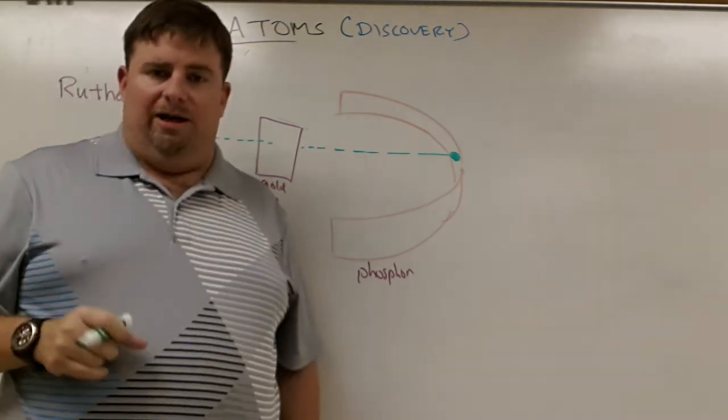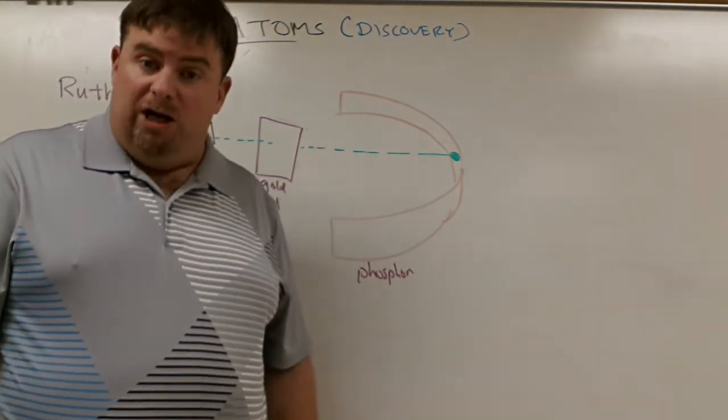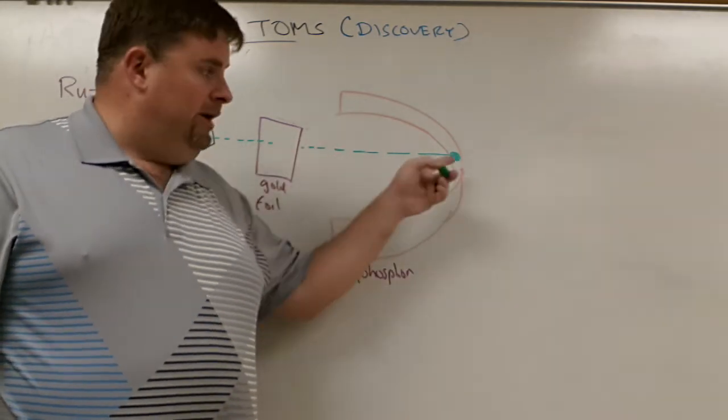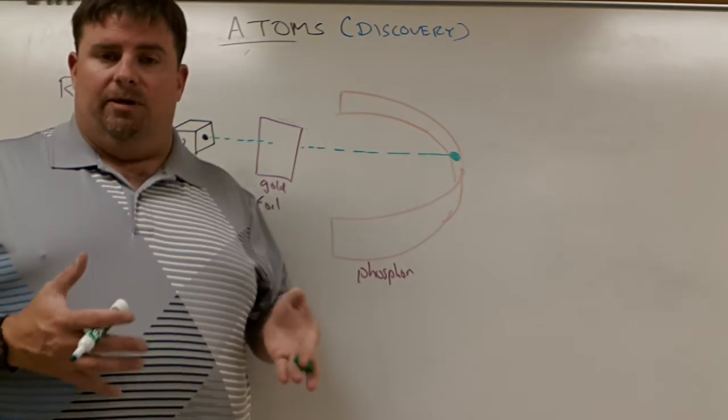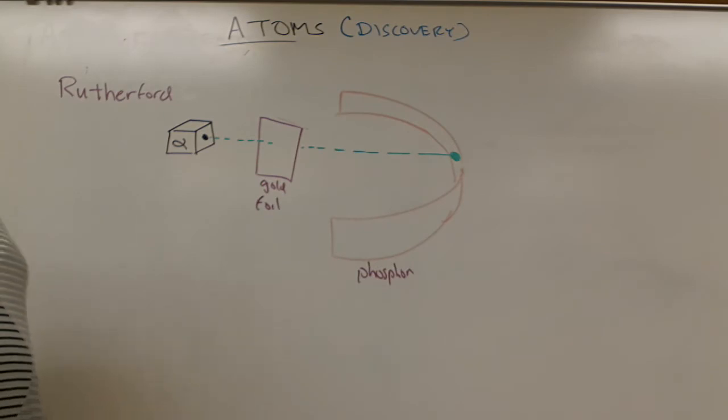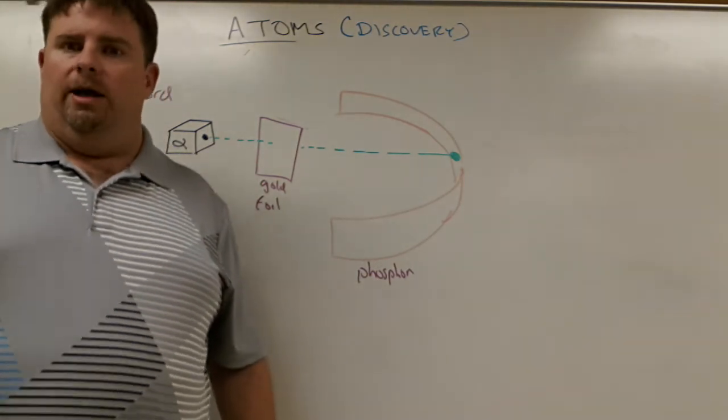And that means every time it hits, you see a little flash of light, and that was a graduate student's job, to sit there and count the flashes of light. Fun job, right? So as these things come through, they hit the gold foil, would come through and hit that gold foil, they'd come through and hit the phosphor paper, they'd count the number of hits that they got. So Rutherford was like, ah, I'm right. My mentor was right. And wait a minute.